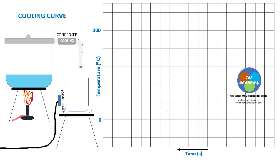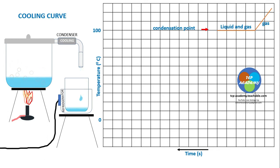So we are applying heat energy here to the setup. There we have the water being changed to gas. We have a condenser that is cooling that gas, thus condensation taking place. And the gas is being converted here into liquid — pretty much that condensation point.